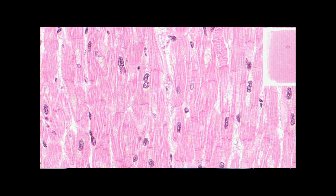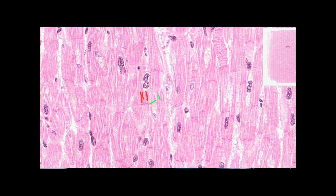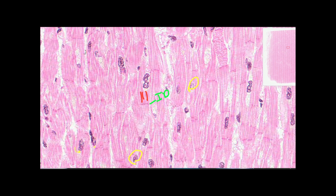Here's one more slide — a plastic section from a monkey heart — that very nicely shows the myofibrils streaking down the cells and the intercalated discs clearly visible. The central nucleus is apparent, with glycogen stores located right next to it. Remember, these are transverse intercalated discs you're seeing, not the lateral ones.